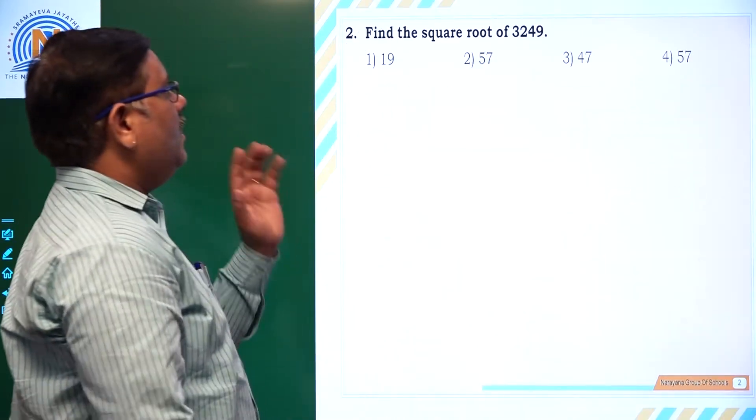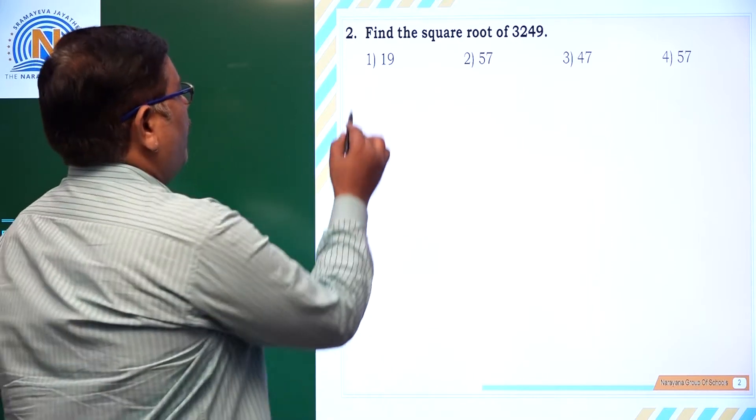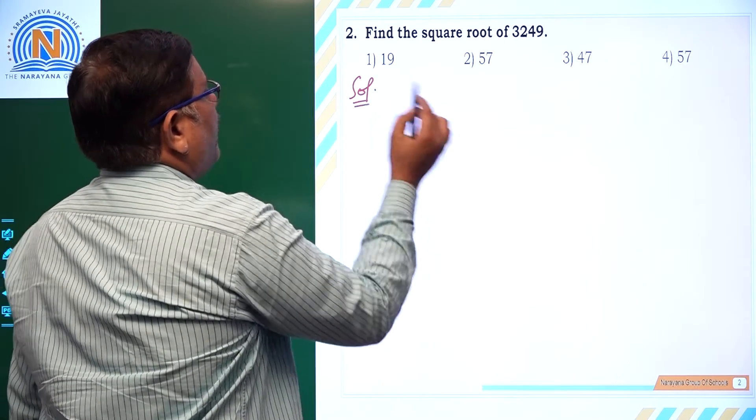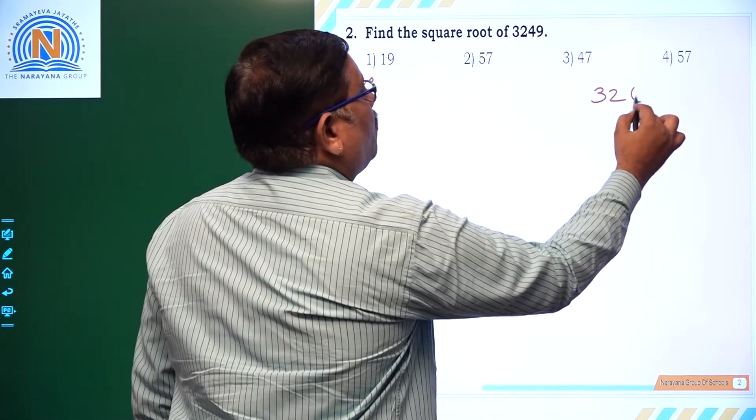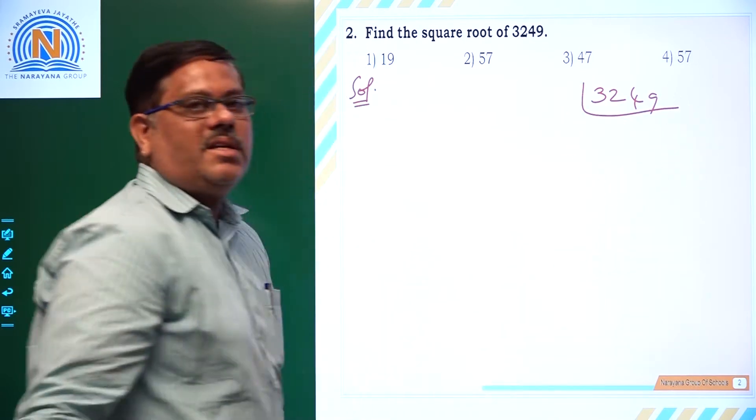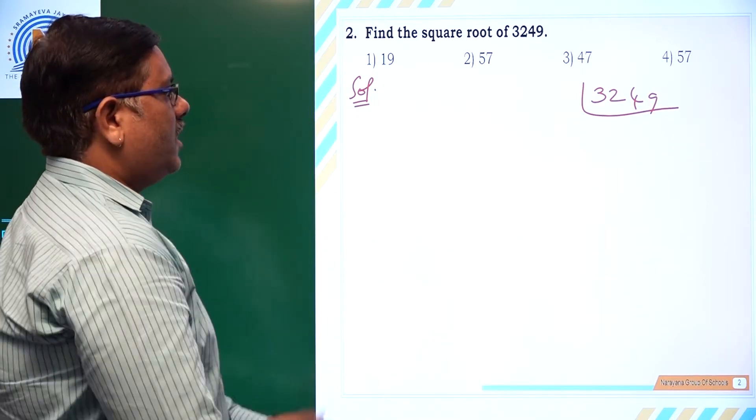Let us see the next question. Find the square root of 3249. If you take 3249, even here you have to find its prime factors. So let us try to do that.